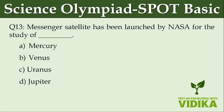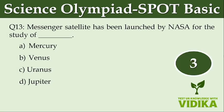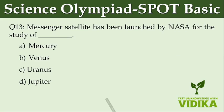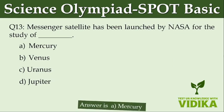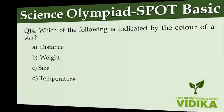Messenger satellite has been launched by NASA for the study of dash. Option A: Mercury. Option B: Venus. Option C: Uranus. Option D: Jupiter.